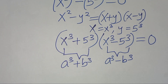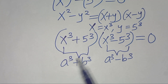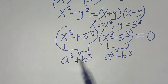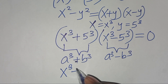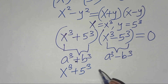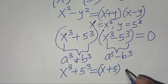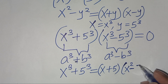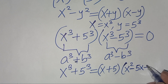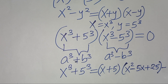x to the power 3 plus 5 to the power 3 is the sum of two cubes, so we can express it as (x plus 5)(x squared minus 5x plus 5 squared), where 5 squared equals 25. Let's call this equation 1.